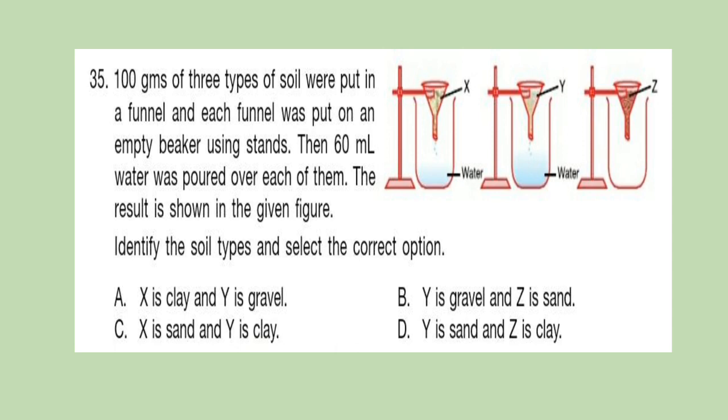Question 35: One hundred grams of three types of soil were put in a funnel and each funnel was put on an empty beaker using stands. Then 60 ml water was poured over each of them. The result is shown in the given figure. Identify the soil types and select the correct option. Think about your answer.